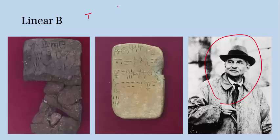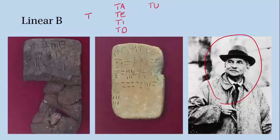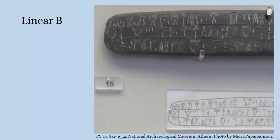So for instance, the syllable 'ta' has its own symbol, 'te' has its own symbol, 'ti' has its own symbol, 'to' and 'tu' — each of these has its own symbol in Linear B, and that means that Linear B needs a lot more symbols than an alphabet does. On this tablet, we can see the Greek word 'tripodes,' written in the upper left-hand corner, which is the Greek word for tripods.